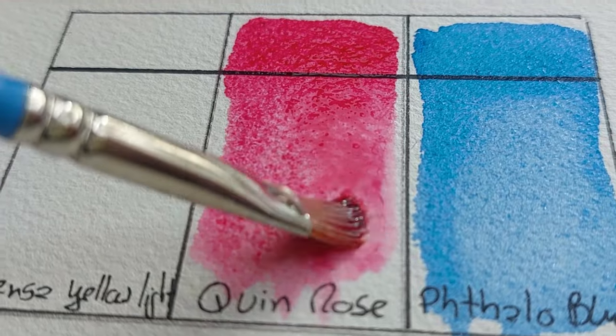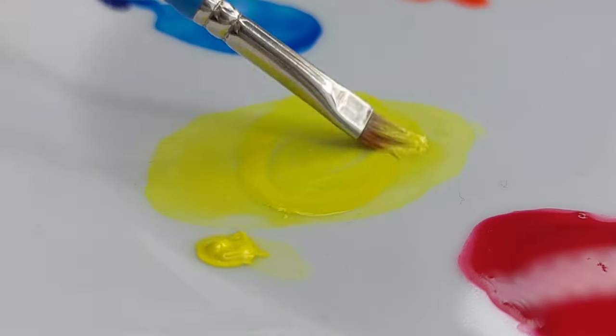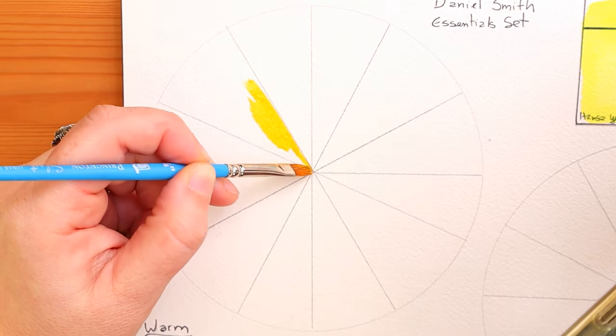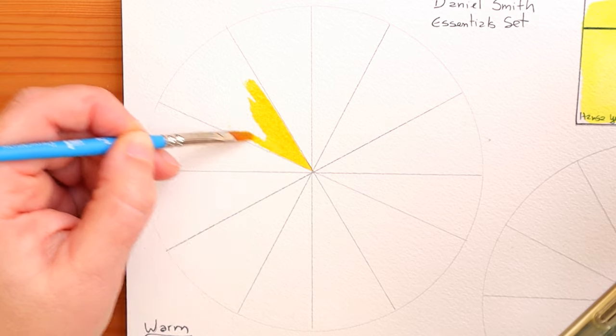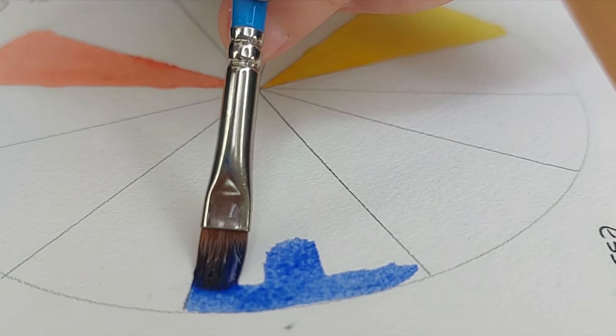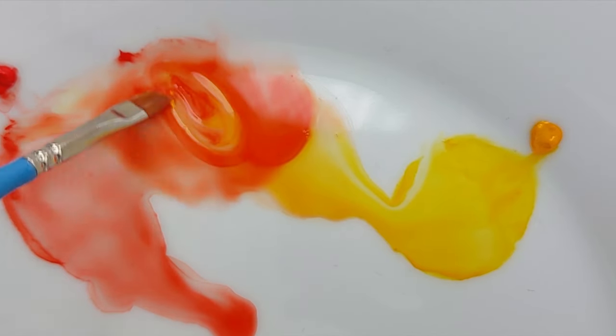This is gorgeous. These are gorgeous, gorgeous paints. So the swatches are done. It was pretty easy. It is only six tubes. But now, I think we should try a color wheel for the very first time. I think that would be a really cool thing to do.